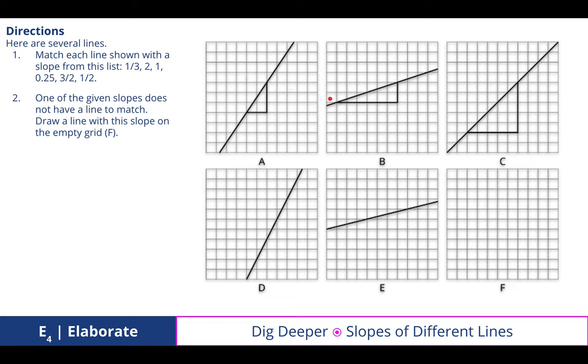So if I look at this one, diagram B, I'm only going up 1, 2, and then going over 1, 2, 3, 4, 5, 6. So vertically 2, horizontally 6. Well, simplified, that's 1 third. Look at that. That's less than 1, which it's much more shallow.